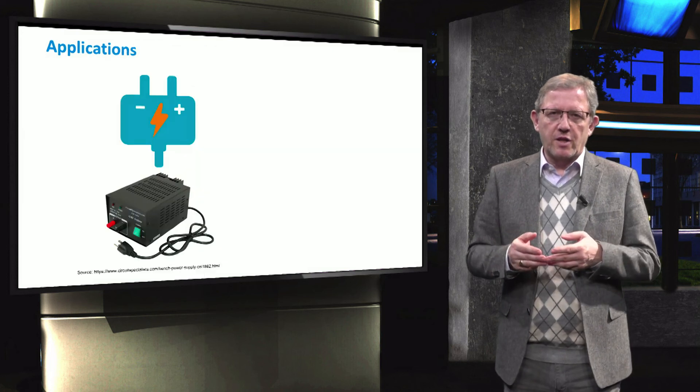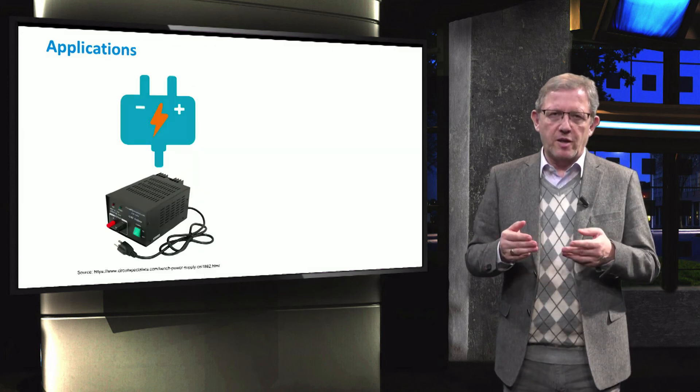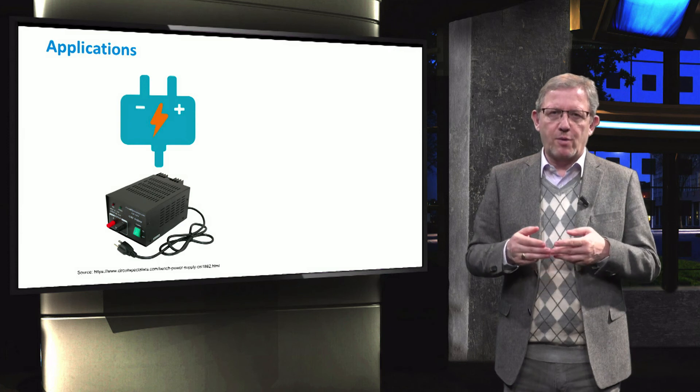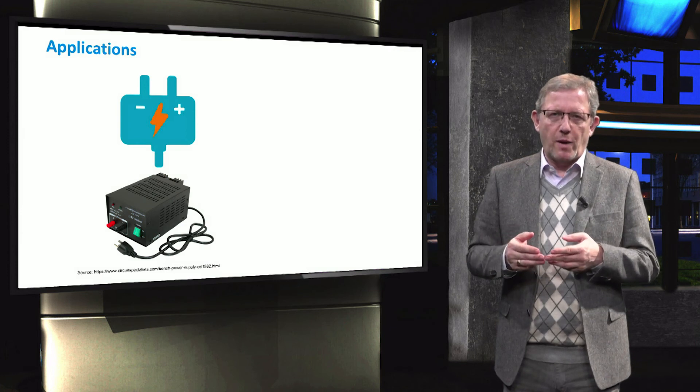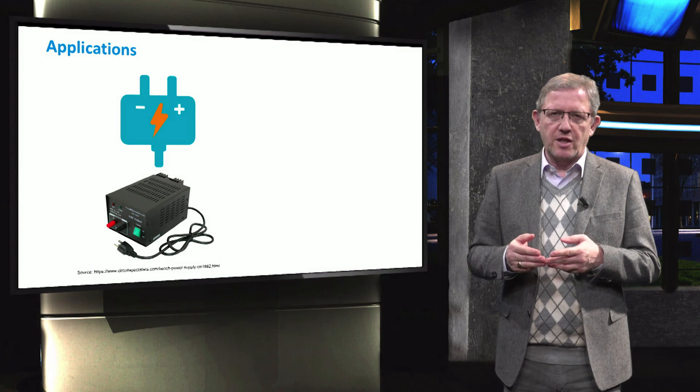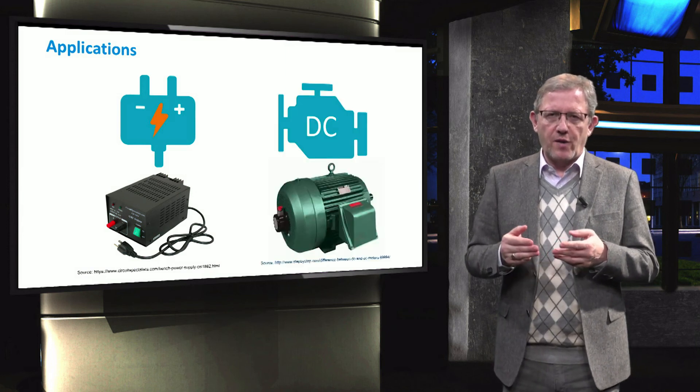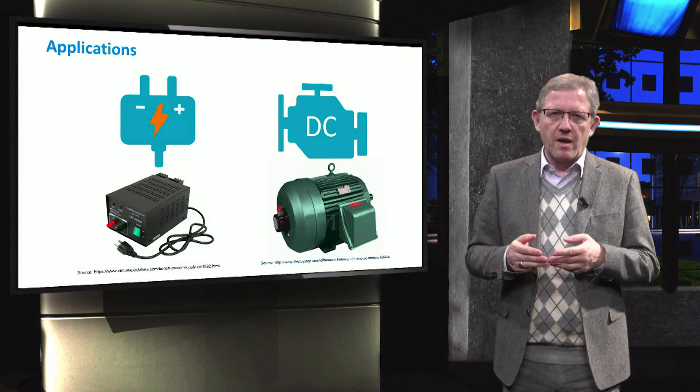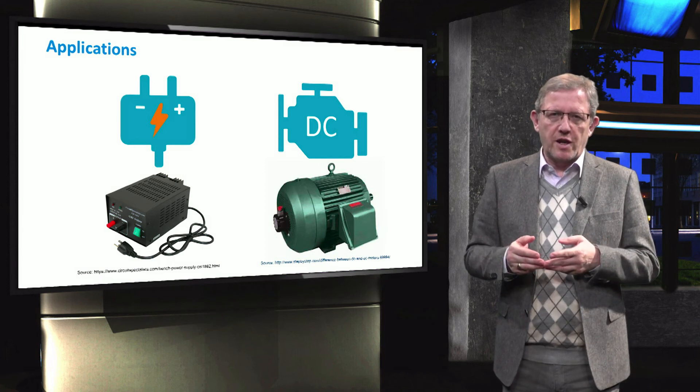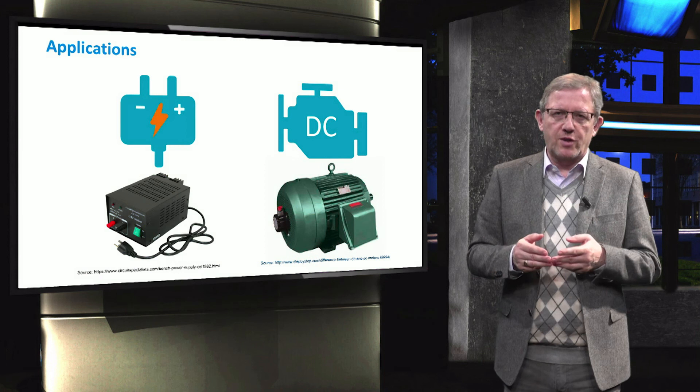DC-DC converters are used in a wide range of applications. Particular boost and buck converters are broadly employed for regulated switchboard power supply applications as it is shown in the figure. Also, they are used for power electronic interface, DC motors for example, boost converter for generative braking and buck converter for driving in such motors.